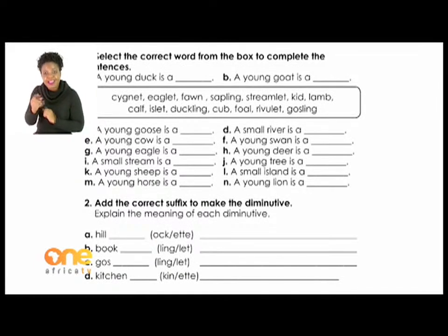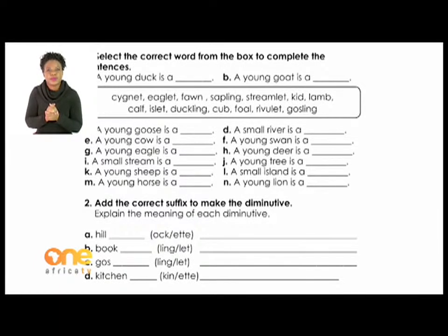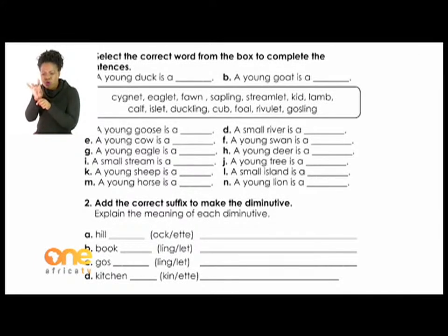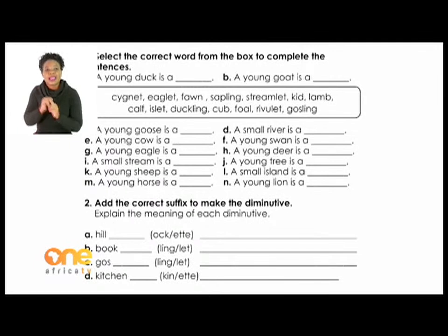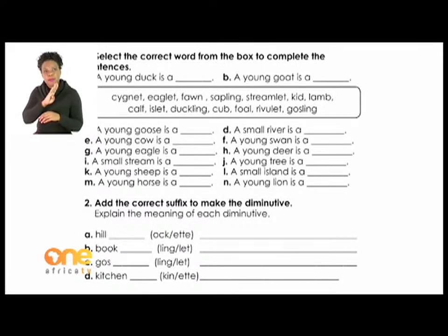Activity Two on the same page says: 'Add the correct suffix to make the diminutive and explain the meaning of each.' For instance, 'hill' — do we say hillock or hillet? The answer is hillock, meaning a small hill. For 'book' — do we say bookling or booklet? The answer is booklet, meaning a small book. Continue with the remaining activities.